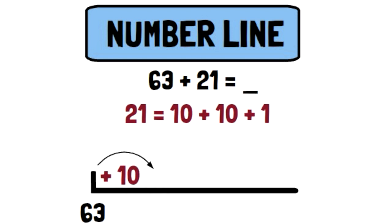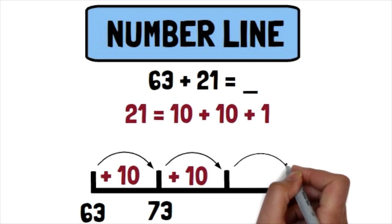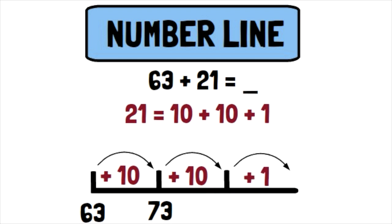Then you would say, well, how much is 63 plus 10? And hopefully they would know that on that next line, they would need to write 73. Now they need to add their next group of 10. So they would add 10. And on that next line, hopefully they would know that would be 83. Then you would say, well, you only have to add one more. What's 83 plus 1? And they would arrive at 84 at the end of their number line.